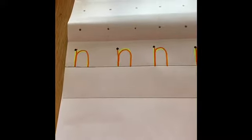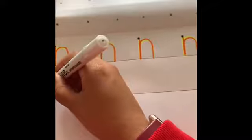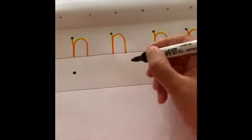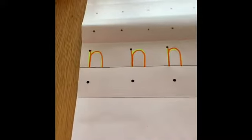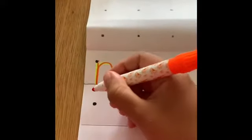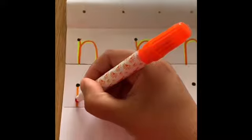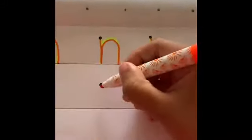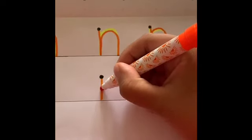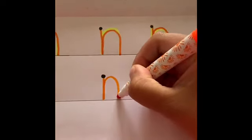Wow, super sounds everybody! Now you're going to have a go writing it independently, which means on your own. You can have a little bit of help by getting the person that's helping you to put a little black dot to show you where to start and where to put your pen. Just remember to say the rhyme as you're writing it — down knobby over his net.